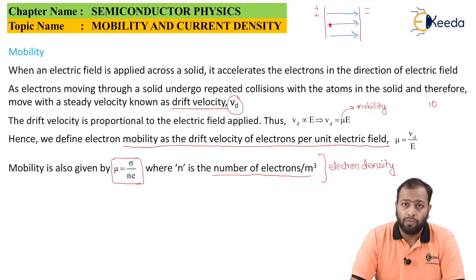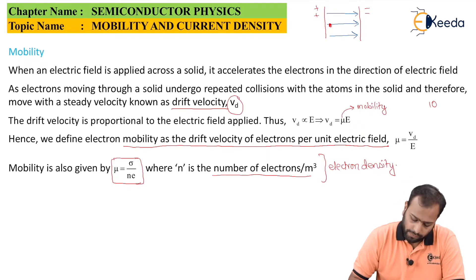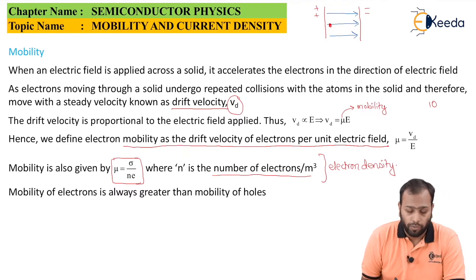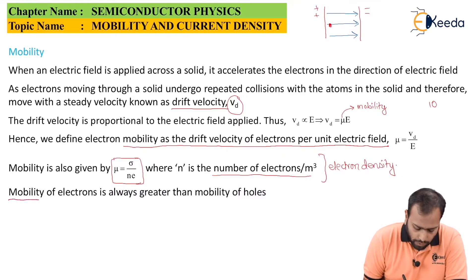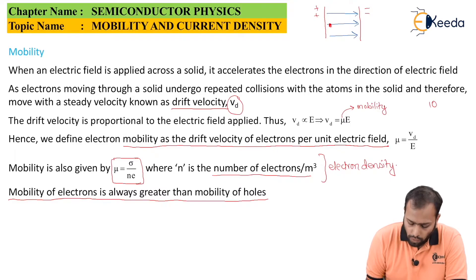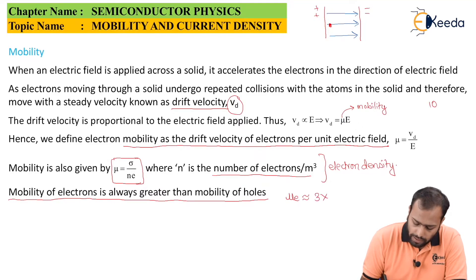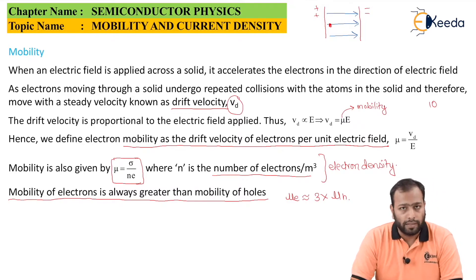These formulas have big importance in numericals. A key fact to note: mobility of electrons is always greater than the mobility of holes. In general, the mobility of electrons is almost equal to three times the mobility of holes — this is a fact you need to remember.